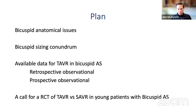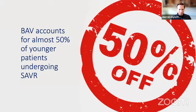The broad outline is to talk about some of the anatomical issues that face us when considering TAVR and Bicuspid Aortic Valves, briefly touch on the sizing conundrum — and I know other speakers have discussed this in more detail — talk about some retrospective and prospective observational data, and then really give a call for a randomized controlled trial of TAVR versus SAVR, particularly in younger patients with Bicuspid AS.